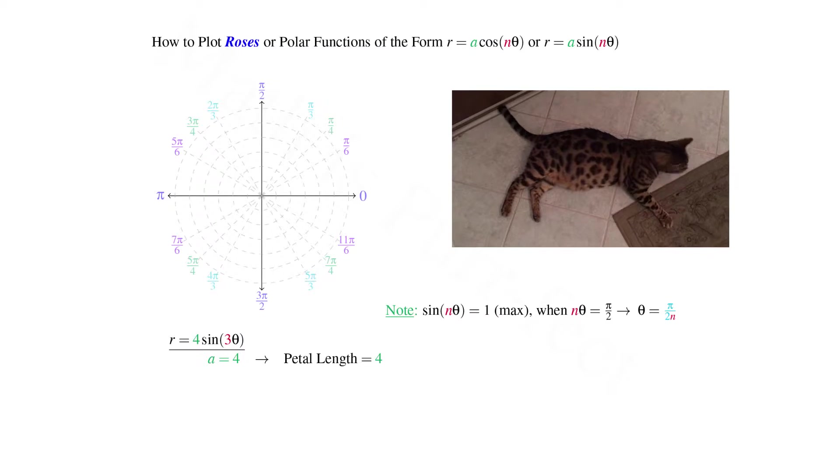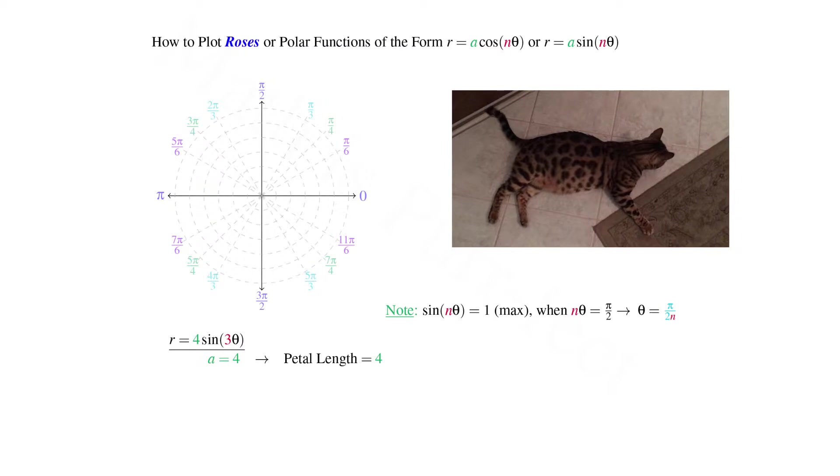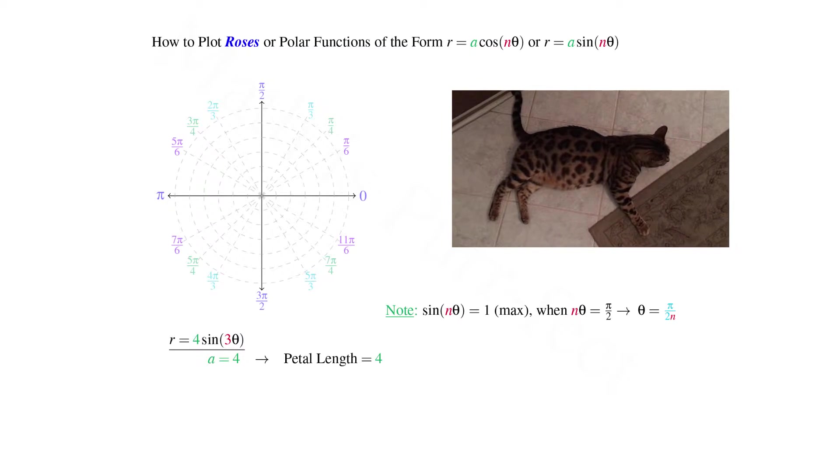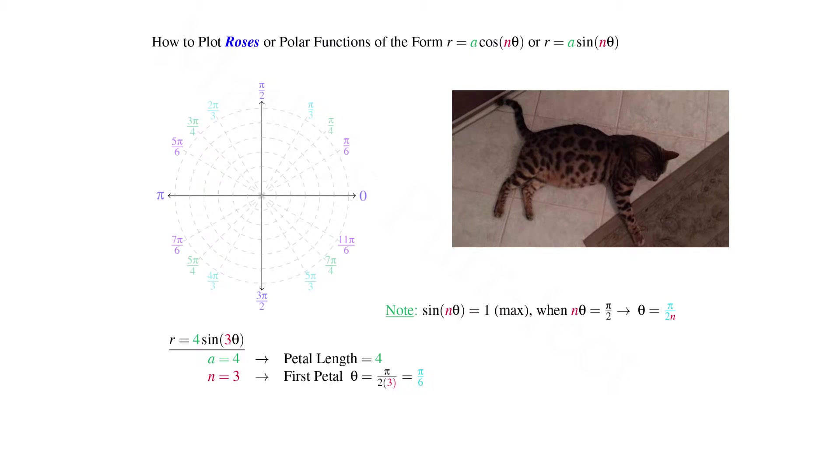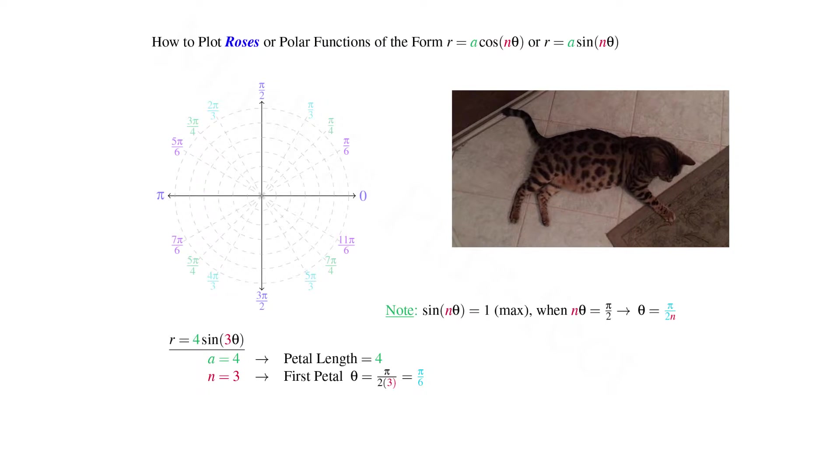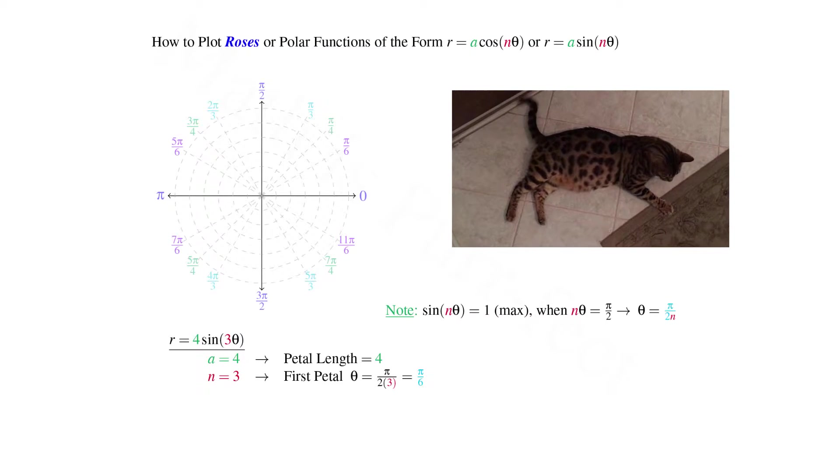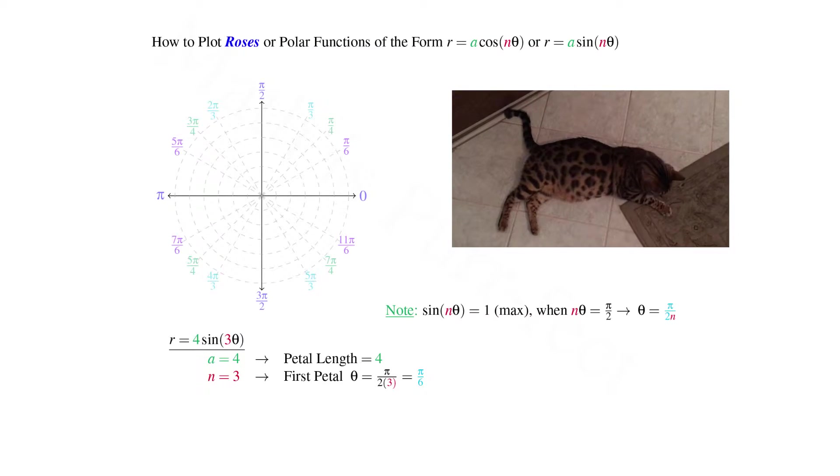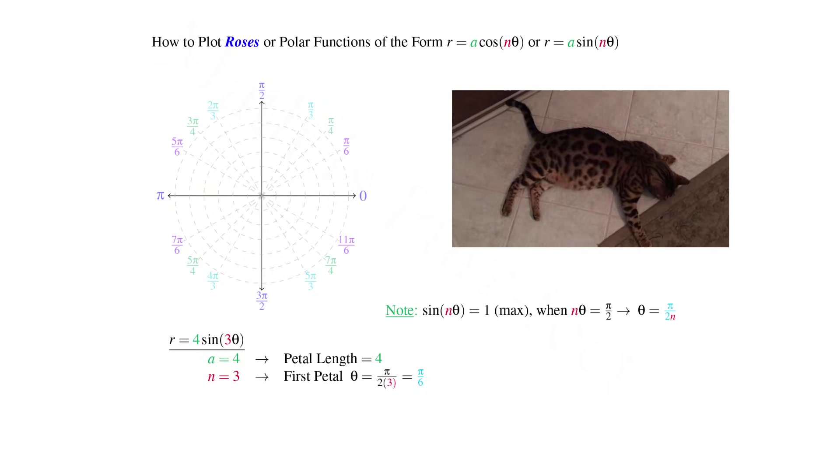Going back to our equation, we note that the length of each petal is given by the coefficient a, which in our case is 4. Secondly, we note that our first petal, where sine is maximized, will be at π/(2n), where n in our case is 3. Hence our first petal will be at π/6.